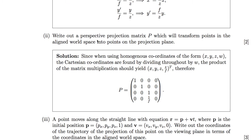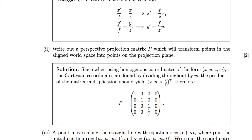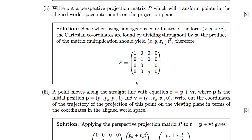The next part: write out the perspective projection matrix which transforms points in aligned world space into points in the projection plane. Because we're using homogeneous coordinates with a four-tuple, we divide throughout by the fourth element to give Cartesian coordinates. The projection matrix is essentially the identity matrix, with the exception that the (4,3) position has 1 over f, which multiplied by z gives z over f, and a zero in the (4,4) position.